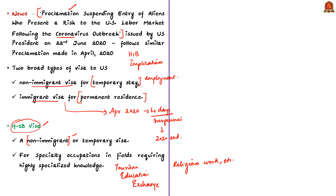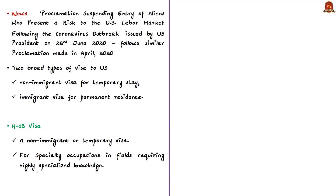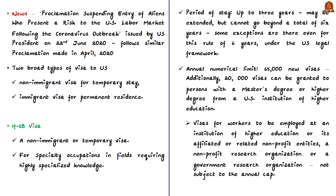If a person is given an H-1B visa, it means that person is going to work in specialty occupations in fields that require highly specialized knowledge. Specialty occupation refers to occupations requiring a higher education degree or its equivalent. Such skilled workers have been admitted to the USA since 1952. H-1B visas are also issued for fashion models of distinguished merit and ability. Individuals are admitted for up to 3 years, which may be extended, but generally cannot exceed 6 years, though some exceptions exist under US legal framework.